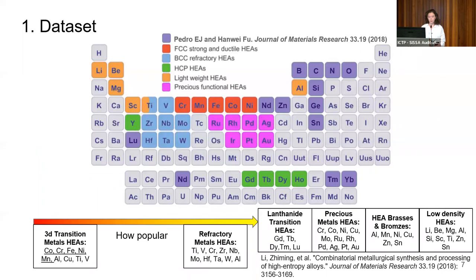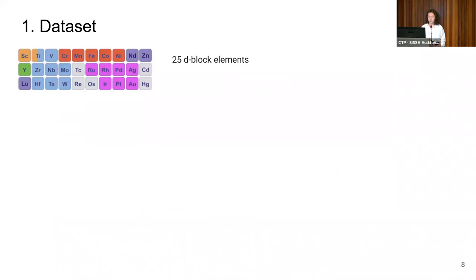First of all, we looked at all the elements which are used typically to create high-entropy alloys. Here you see on the slide the top popular elements are 3D transition metal elements. We focused on those because we also want to get some insights if we can cluster elements by their chemical nature. For now, we took the group which shares some similarities in their chemical nature.